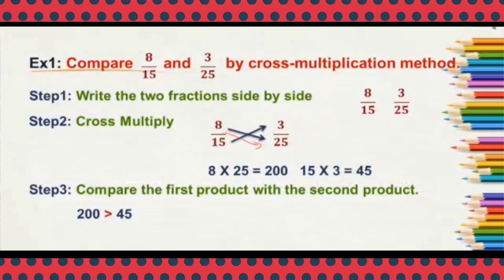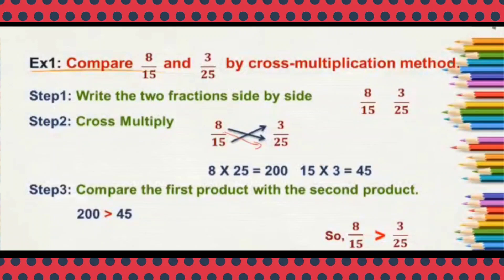That means 8 by 15 is greater than 3 by 25. Here we just cross multiply numerator into denominator and denominator into numerator. Remember, do not change the order — always compare the first fraction with the second fraction and not vice versa. First fraction numerator you will multiply with second fraction denominator, and first fraction denominator you will multiply with second fraction numerator.